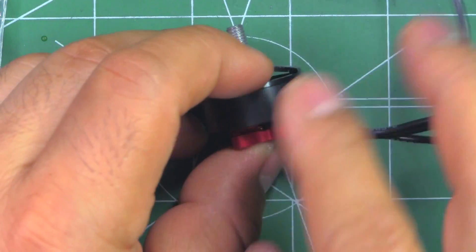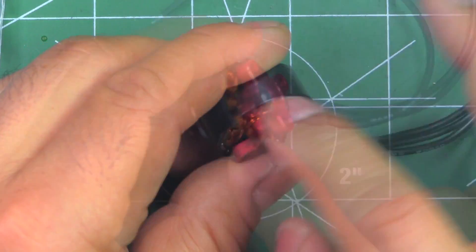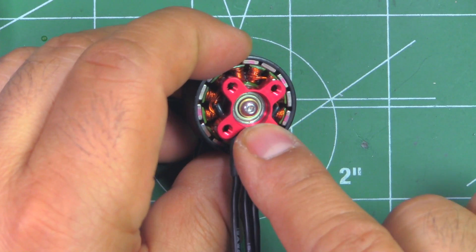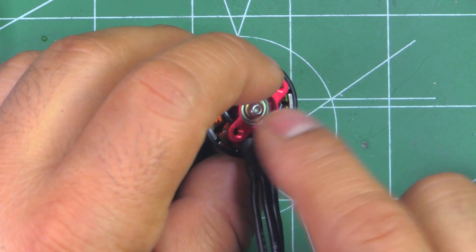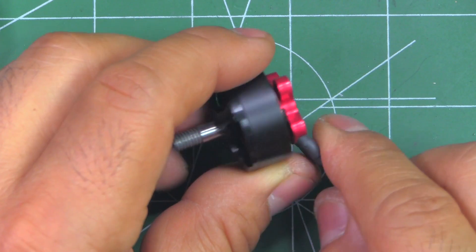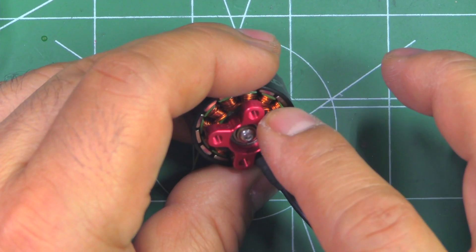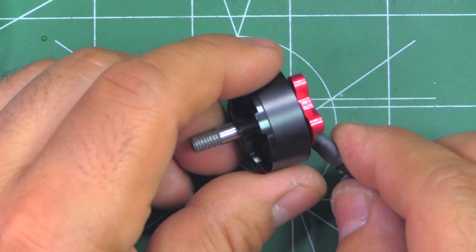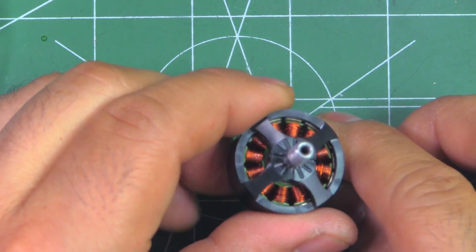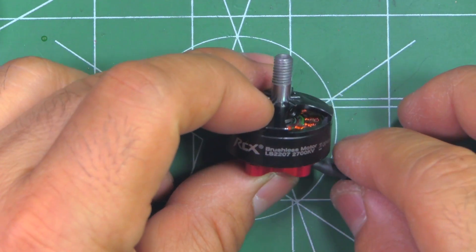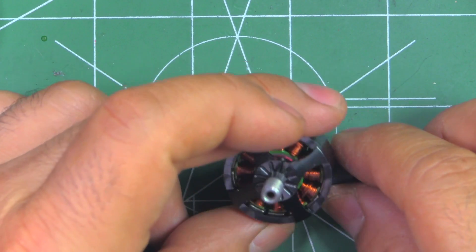So basically it's the same armature, same shaft. And what they're saying is the difference is that they're using different bearings, more generic bearings. And also the magnets are different and they're also saying the steel on the stator is different. But it doesn't mean that the motor is going to perform poorly. So I would imagine it's only going to be slightly less powerful.